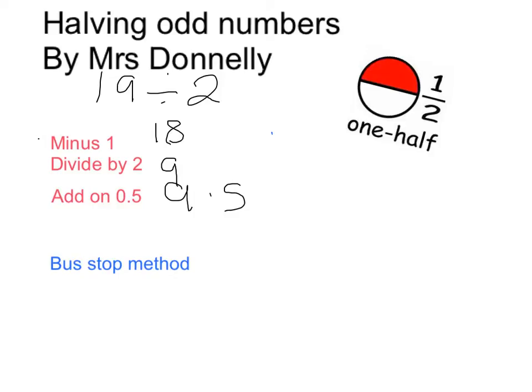Let's try that for the number 7. So if I'm doing 7 divided by 2, I minus 1, which gives me 6, divide that by 2,